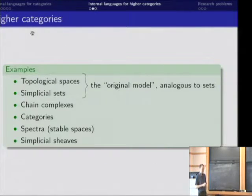Here's some examples of higher categories. Topological spaces where the higher morphisms are homotopies and higher homotopies, simplicial sets and other sorts of similar models for things like topological spaces with similar sorts of homotopies. Chain complexes where we have chain homotopies and higher homotopies.